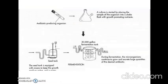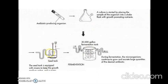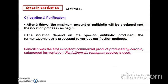pH is maintained at the optimum level by adding acids or bases to the tank as necessary. This pictorial representation shows the antibiotic-producing organism obtained in a tube, then transferred to a shake flask to scale up the culture, then transferred to a seed tank for further scaling up, and finally transferred to a large fermentation tank where fermentation results in production of the desired antibiotic.